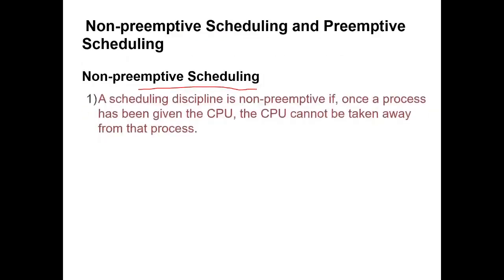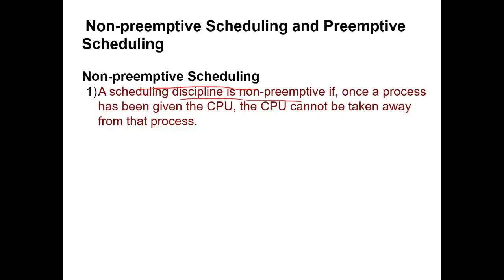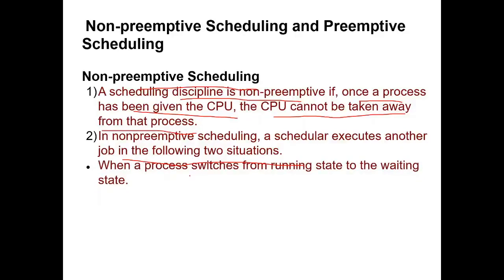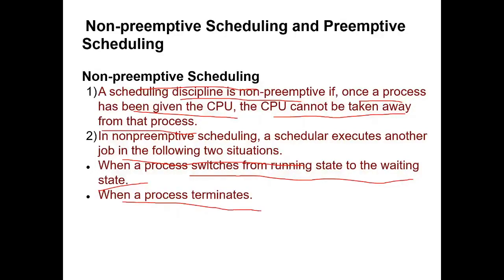Non-preemptive scheduling: a scheduling discipline is non-preemptive if, once a process has been given the CPU, the CPU cannot be taken away from that process. Once the CPU is assigned to a process, the process must finish its full execution before the CPU is given to any other process. The scheduler executes another job in two situations: when a process switches from running state to waiting state, or when a process terminates.